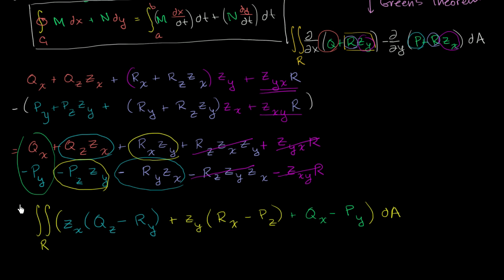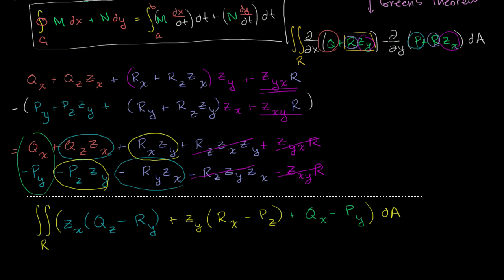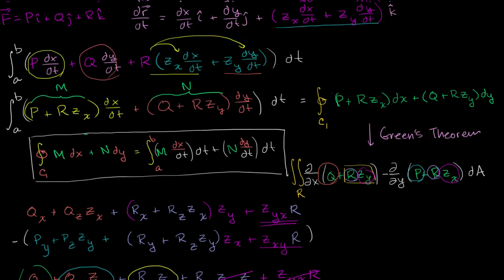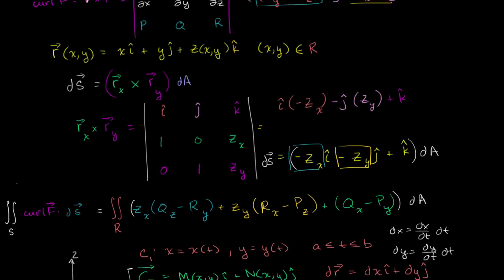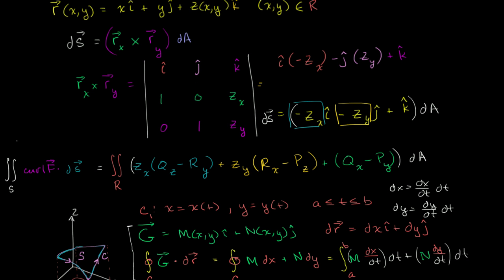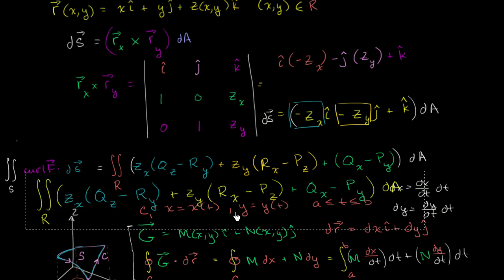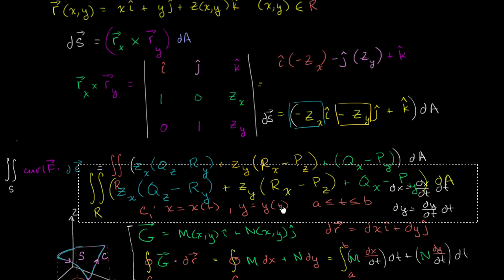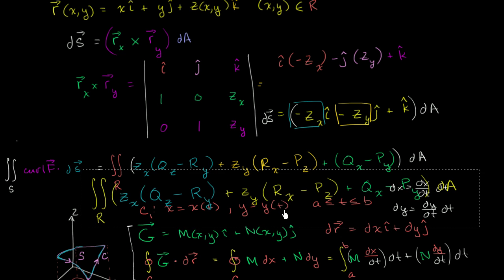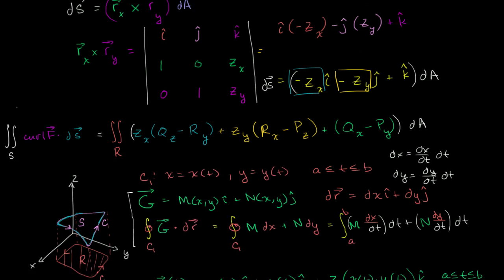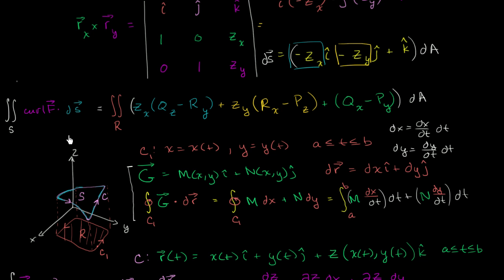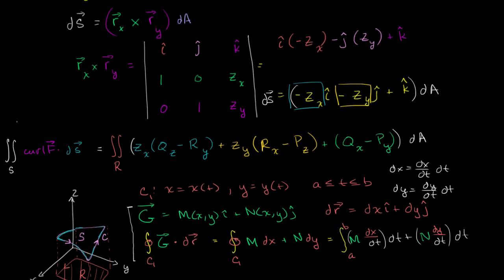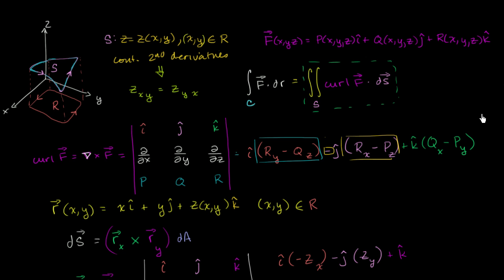Now we can compare that to what our surface integral was. When we paste it, we see that they are identical — they are identical. Our line integral is identical to the surface integral expression. So F dot dr around path C simplified to this, and our surface integral simplified to this same expression. Using the assumptions we had, they both simplified to the same thing. So now we know that for this special case, our line integral is equal to our surface integral. And we are done.